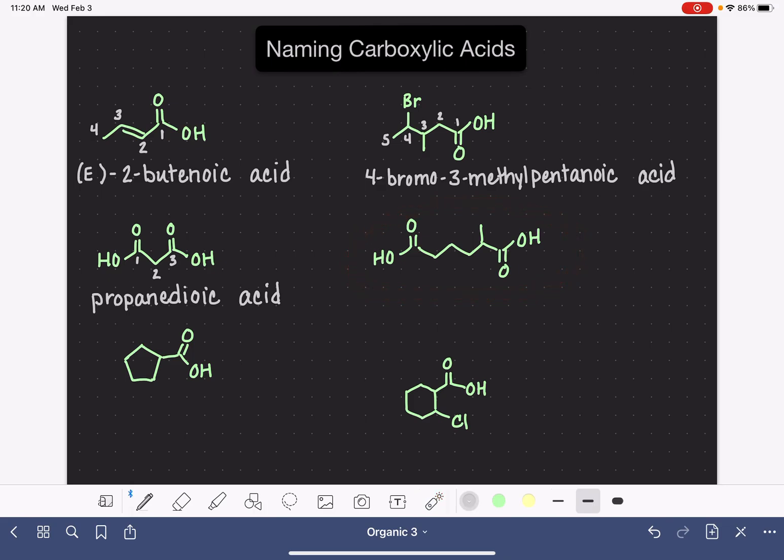Here's another example of a dioic acid. For numbering, we always want to number from one carboxylic acid group to the other. If there's a substituent present, we want to number in the way that's going to give that substituent the smallest possible number. So this is going to be numbered from right to left, 1, 2, 3, 4, 5, 6. Locate that substituent. It's on carbon number 2, and it's a methyl group. Then say the name of the carbon chain. It's a hexane. Don't drop the E. Dioic acid.